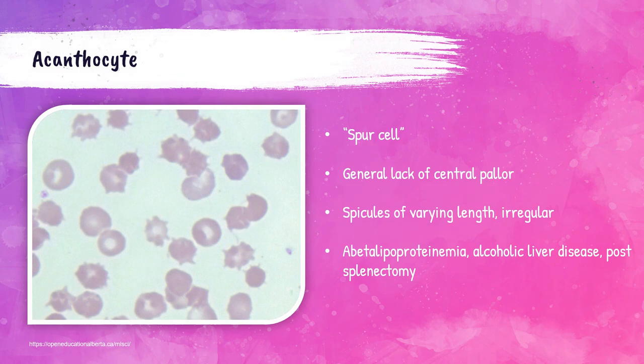Not to be confused with echinocytes, acanthocytes are another abnormal red blood cell morphology, also referred to as spur cells. Echinocytes are called burr cells; acanthocytes are called spur cells. These spur cells look very similar to echinocytes, but the difference is that acanthocytes have irregular spicules of varying length, whereas echinocytes have evenly spaced projections. Patients can get spur cells after they have their spleen removed, in patients with liver disease caused by alcoholism, and also in something called abetalipoproteinemia — a genetic disorder that affects the absorption of fat in the intestine.